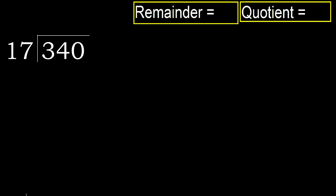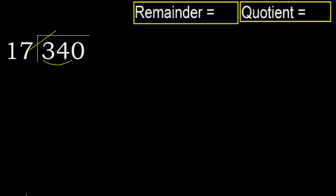340 divided by 17. 3 is less, therefore next. 34 is not less, therefore work with 34. 17 multiplied by which number is nearest to 34 but not greater?